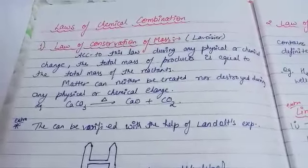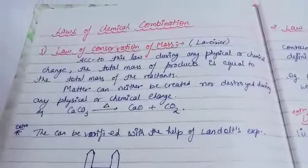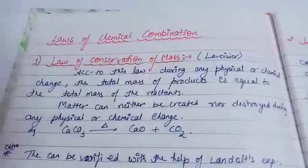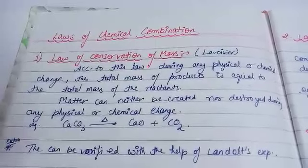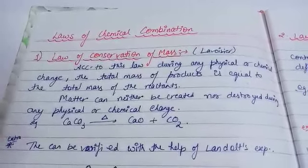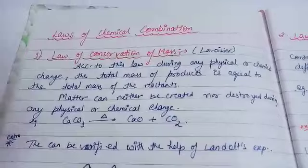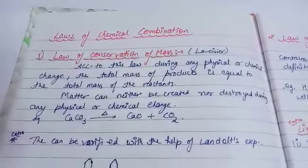The important statement of this law is: during any physical or chemical change, the total mass of products is equal to the total mass of reactants. You can take any example to verify this — total mass of reactants equals total mass of products.